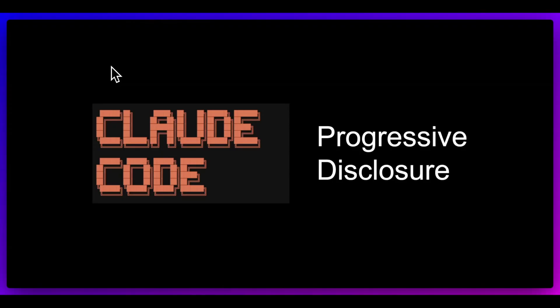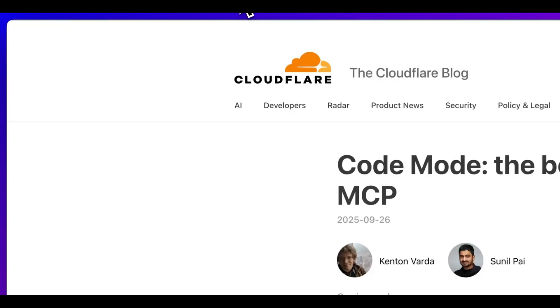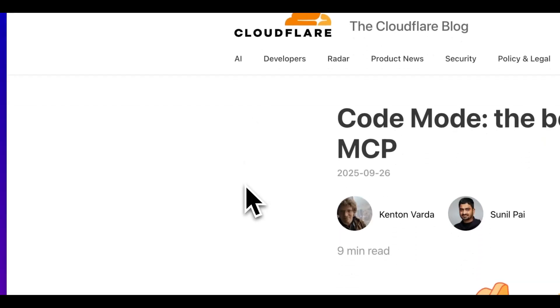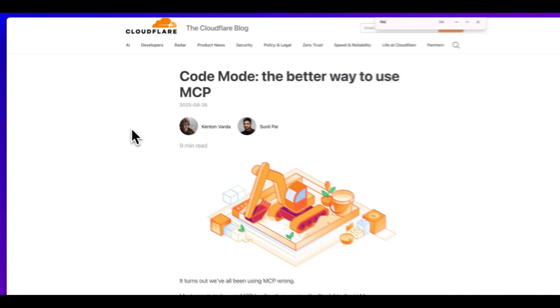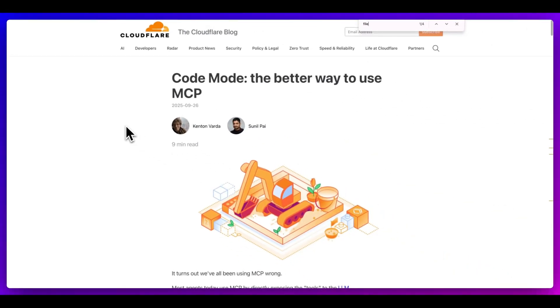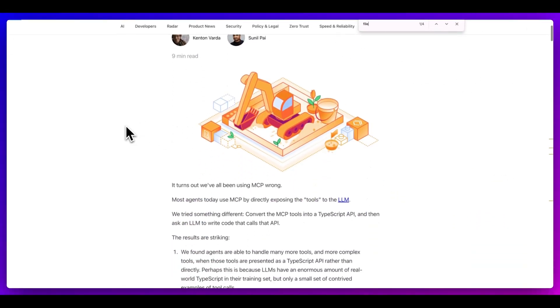Honestly, it's not probably what we would have expected six months ago. In this video, I'm going to be touching on progressive disclosure, but I'm also going to be touching on bash and file systems generally. This is going to be applicable to how you can use CloudCode, but also within other systems as well as how you can develop agents. Right off the bat, I want to touch on this blog post that came out in September from Cloudflare: Code Mode, the better way to use MCP.